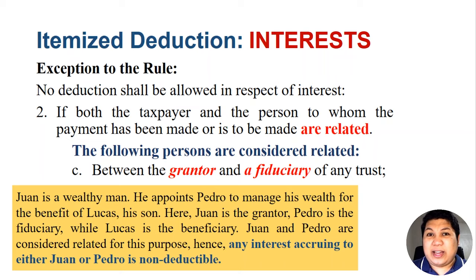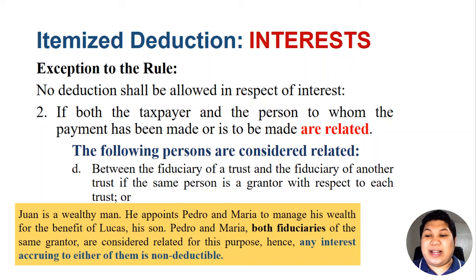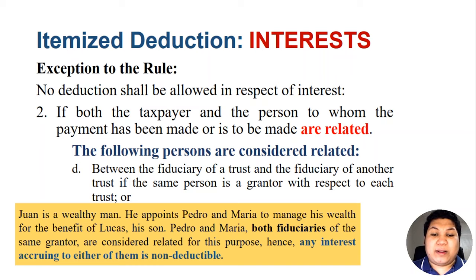Another related party: between the fiduciary of a trust and the fiduciary of another trust if the same person is the grantor with respect to each trust. For example, Juan is a wealthy man who appoints both Pedro and Maria to manage his wealth for the benefit of Lucas, his son. Juan is the grantor, while Pedro and Maria are both fiduciaries of the same grantor. These same fiduciaries are considered to be related; hence any interest accruing to them is non-deductible. If Maria borrowed from Pedro or vice versa, the interest is non-deductible because they are related parties.